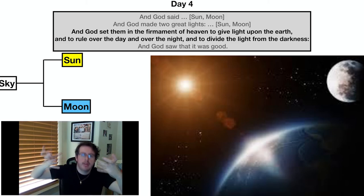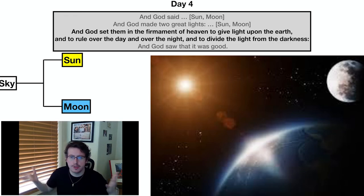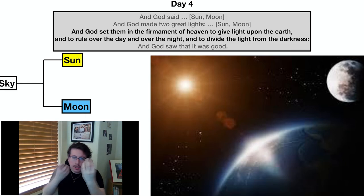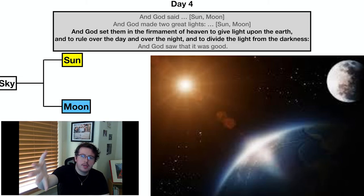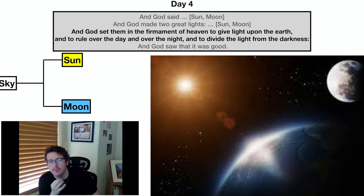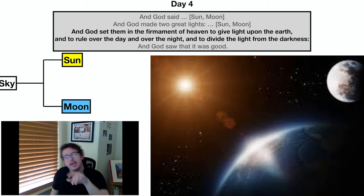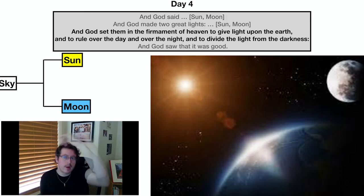Days one through three have a somewhat different feel from days four, five, and six. There's a general pattern across all the days: "And God said blank, and God made blank, and then he judged blank to be good." That's the pattern of all the days. On day four, he created the sun and the moon. He also often gives a purpose to what he creates. He set the sun and moon in the firmament of the heavens to give light upon the earth and to rule over the day and night, and to divide light from darkness. Notice it's referencing day one — day four references day one. We're going to see this pattern of the later three days referencing the first three days.